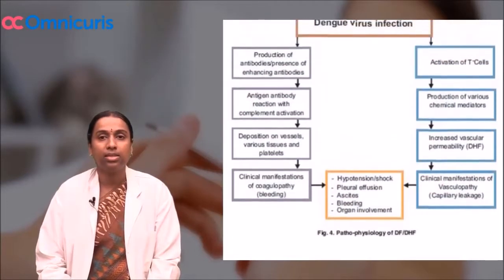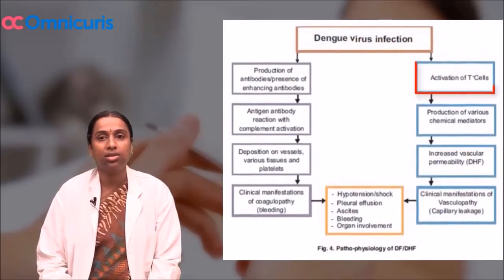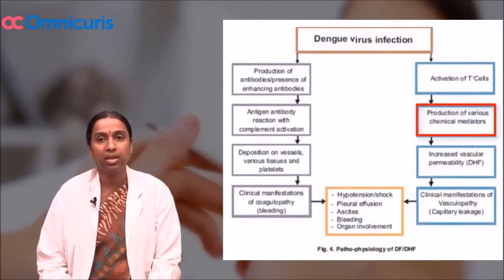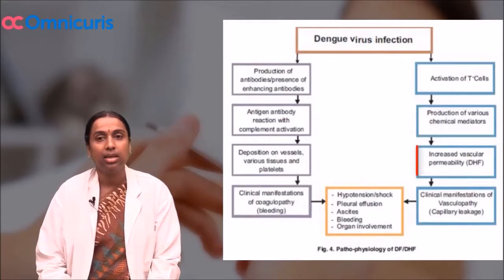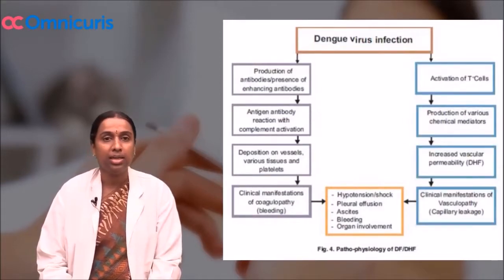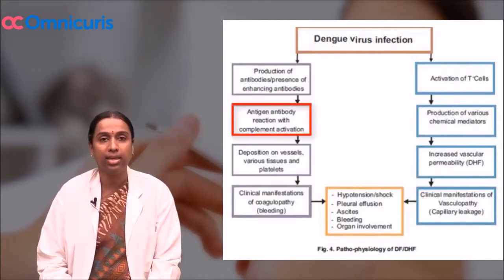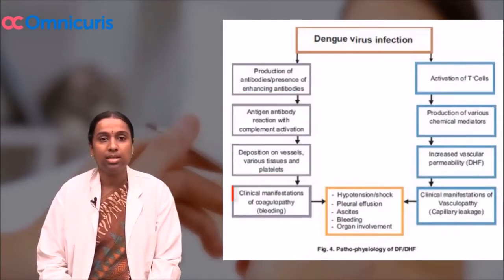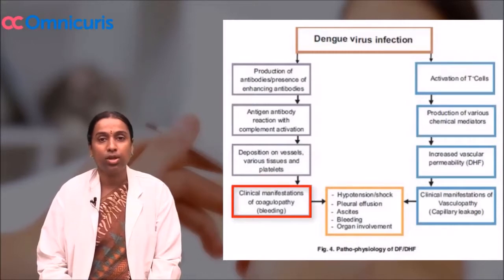Following dengue virus infection, there is activation of T-cells, production of various chemical mediators, increased vascular permeability and clinical manifestations of leak. Simultaneously, there is production of antibodies, antigen-antibody reaction, and deposition on vessels with clinical manifestations of coagulopathy.